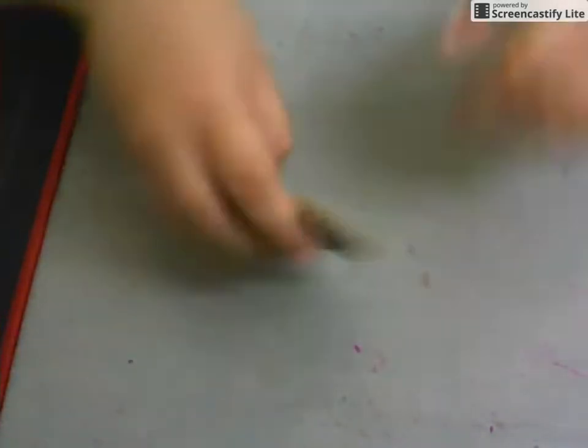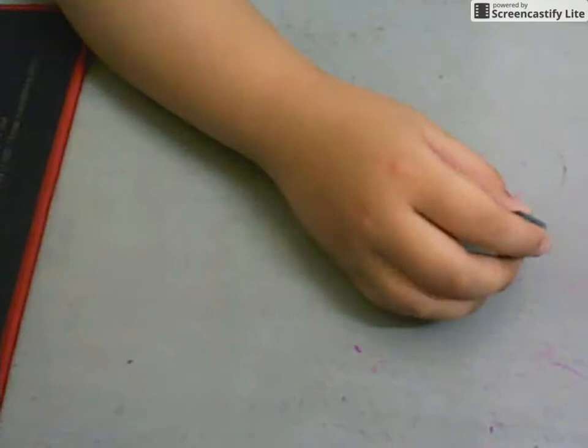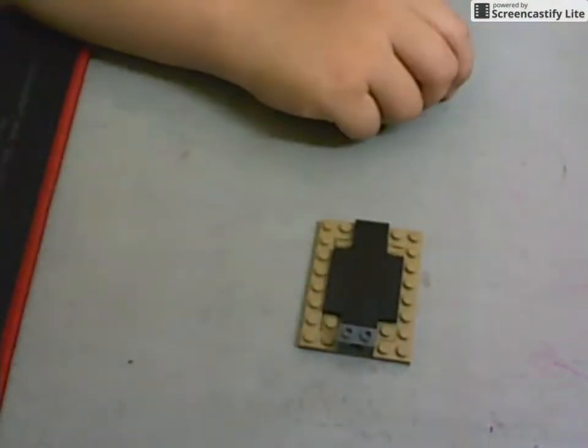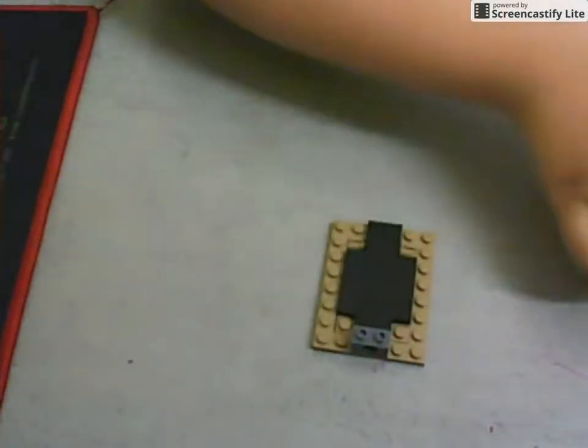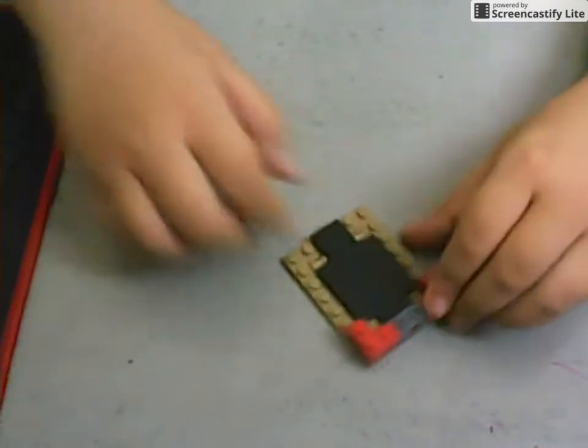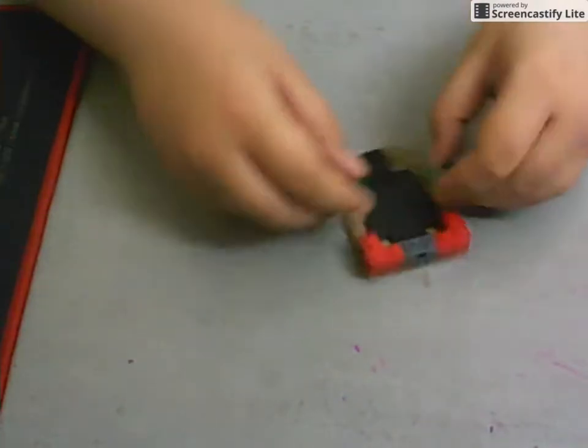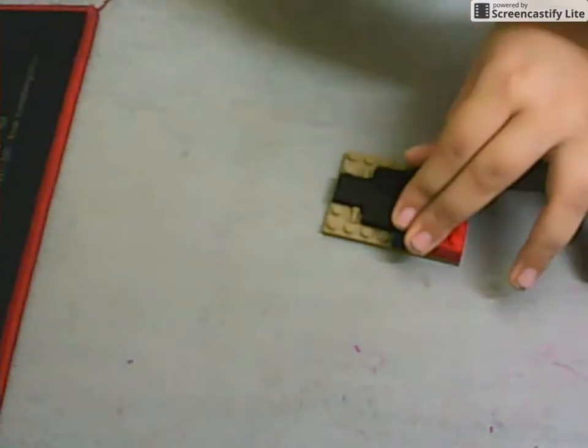So where's the end where the bullet goes out? We need a piece like this to put the bullet in. Here, and we start building the walls there. Just keep building up.